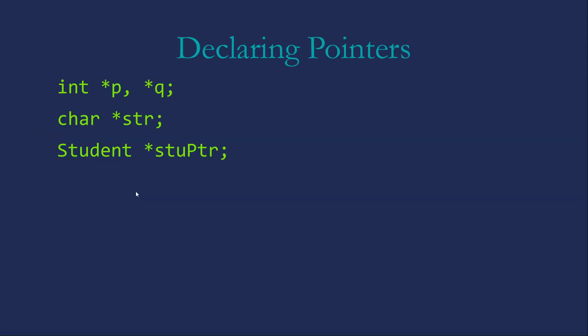What do pointers look like? Here's an example of declaring some pointers. I have a pointer to an int called p, a pointer to an int called q, a pointer to a char called str, a pointer to a student object called stuPointer. Things to note: if I have multiple variables declared, I have to include the star on each one. If I just said int star p, q, q would be an int; only p would be a pointer to an int.